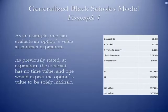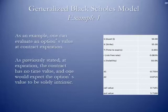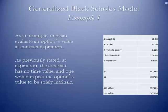Here is what the inputs look like on a Black-Scholes model. As an example, one can evaluate an option's value at contract expiration. As previously stated, at expiration the contract has no time value, and one would expect the option's value to be solely intrinsic. There is a spreadsheet — an Excel spreadsheet — out in Angel under the Lesson Resources as an example of the Black-Scholes model, and these would be the inputs.